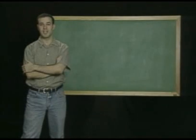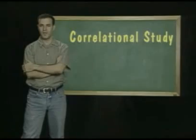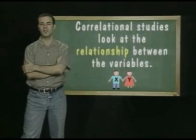The second type of research design is the correlational study. Investigators use correlational studies to look at the relationships between the variables, or the things they want to study.